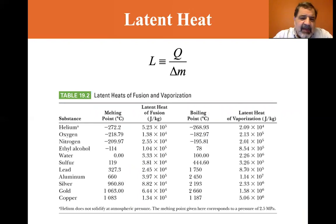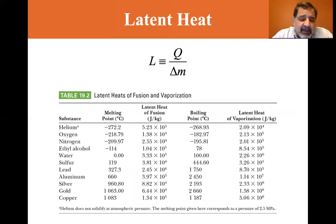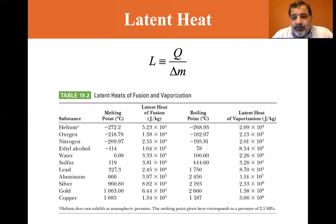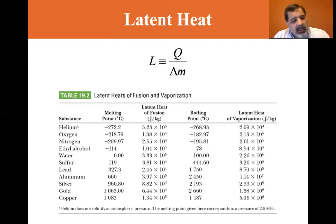There are two different latent heats. The latent heat of fusion is to go from a solid to a liquid. The latent heat of vaporization is to go from a liquid to a gas. One substance you won't see on the table is carbon dioxide, because it has no liquid phase — it goes straight from a solid to a gas.